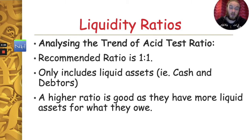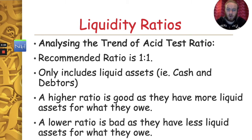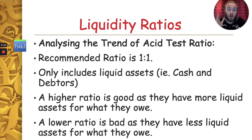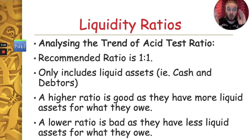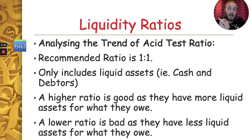The idea is that you have exactly the amount of liquid assets you need to pay back what you owe. A higher ratio is good as it means more liquid assets relative to what they owe, and the lower ratio is bad as it means fewer liquid assets. So what does this mean? For every euro of current liabilities we have, the recommended ratio means one euro of liquid assets — current assets less closing stock — to pay that back. In our case the answer was 1.5 to 1, meaning for every euro of current liabilities we have one euro fifty in liquid assets to pay that back.